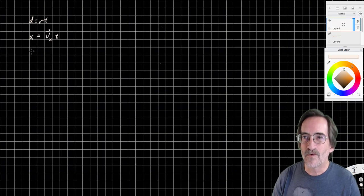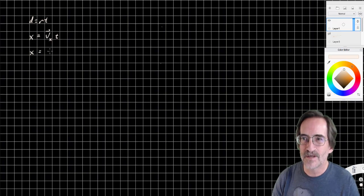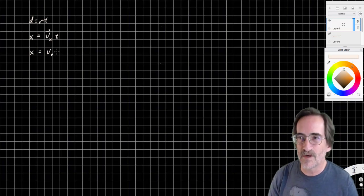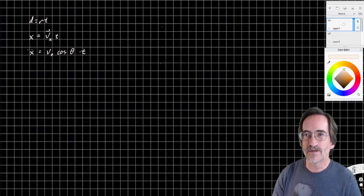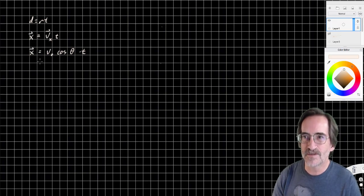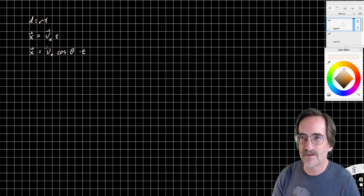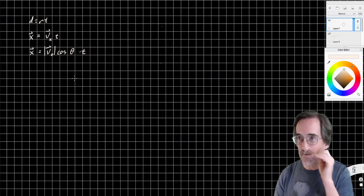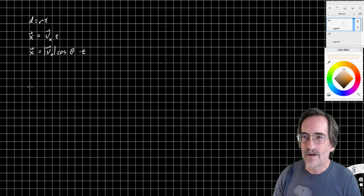You may recall from our last video that horizontal component is going to be the initial velocity times the cosine of the angle of elevation, and then times time. So this is the x-vector, the magnitude of the velocity vector cosine of the angle.